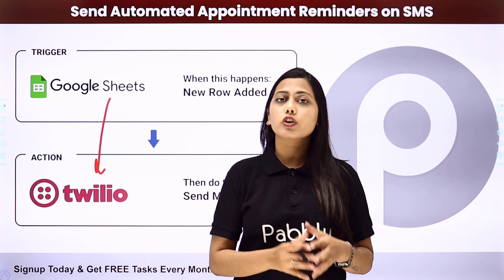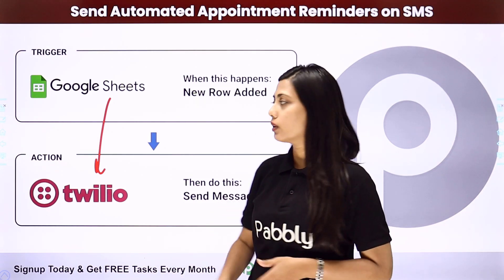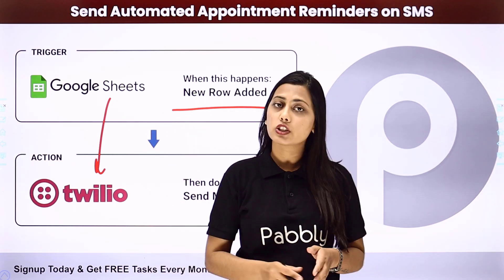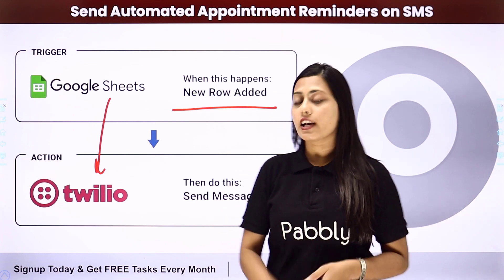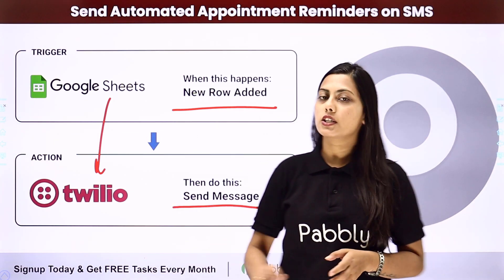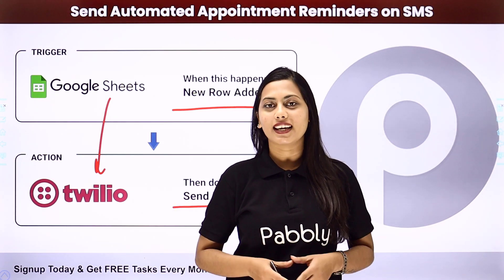This automation will be created with the help of Pabbly Connect, where our trigger will be the new row added in Google Sheet and our action will be to send a message using Twilio. Let us learn how to do that.